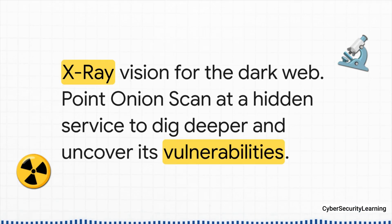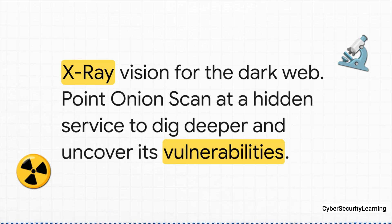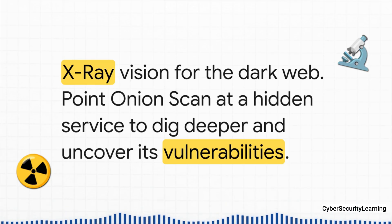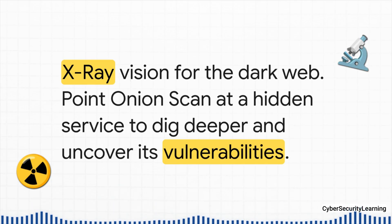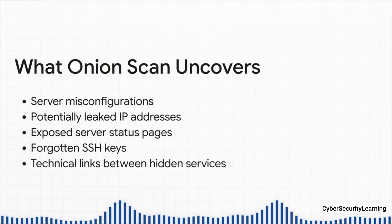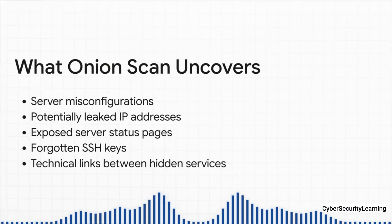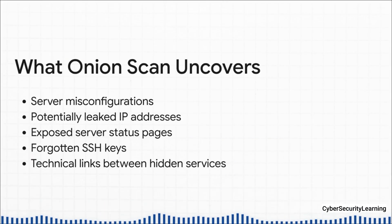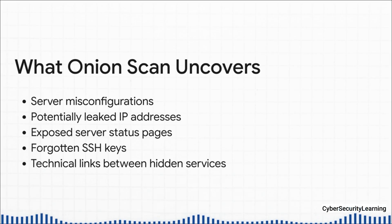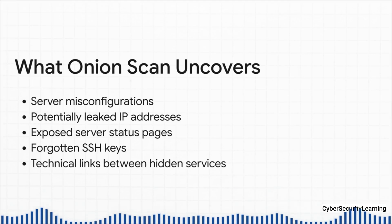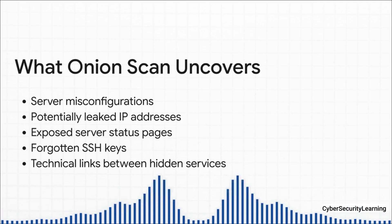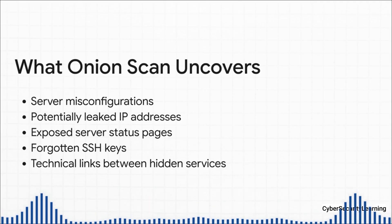For that, you turn to a tool called OnionScan. The best way to think about it is like putting on a pair of x-ray goggles for any .onion address you find. You point it at a site, let it run, and it performs an incredibly detailed scan to see what's really happening behind the curtain. OnionScan hunts for server misconfigurations, exposed status pages that spill technical details, even forgotten developer keys. In some rare but critical cases, a badly configured server might actually leak its real IP address, completely destroying its anonymity. It can also spot technical similarities between sites, helping you map out entire hidden networks.